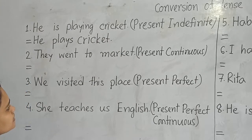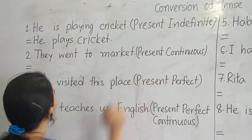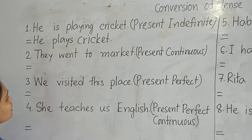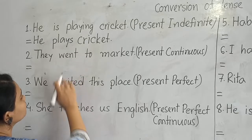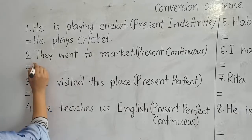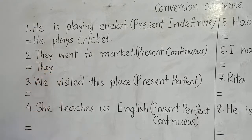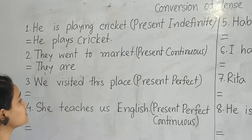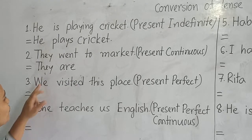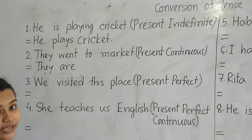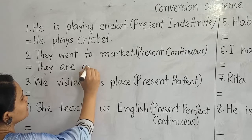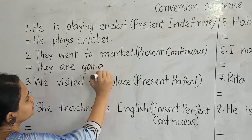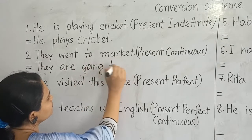Number two: 'They went to market.' We will change it to present continuous tense. Look at the verb 'went' — it is in the past form, the past form of verb 'go', so we need to change it. Our subject is 'they', and according to the structure, after 'they' we write 'are' for present continuous tense, because the subject is plural. Then the verb with '-ing': they are going to market.